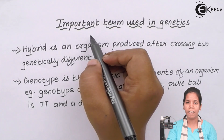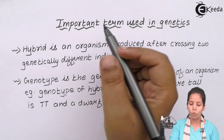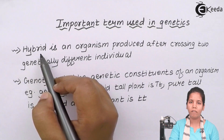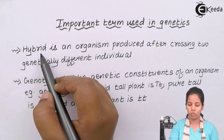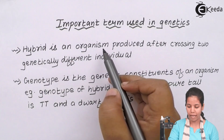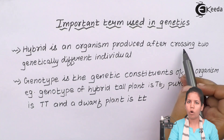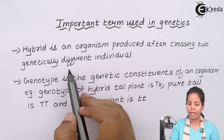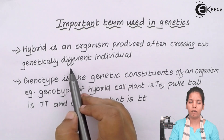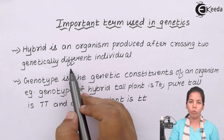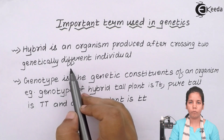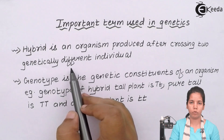Important terms widely used in genetics: the first term is hybrid, which simply means mixture. A hybrid is an organism produced after crossing or mating two genetically different individuals. For example, if I cross a round pea with a wrinkled pea, that will produce an F3 progeny which could be a hybrid containing the dominant traits.